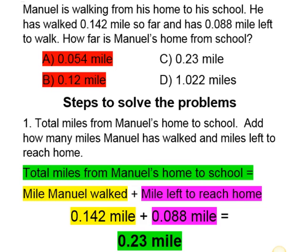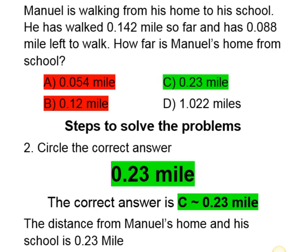So for step one, to find the total miles from Manuel's home to school, we're going to add the miles he has walked and also the miles he has left — 0.142 plus 0.088. When we add those together, our answer is 0.23 mile. Step two: circle the correct answer. In looking at our answer choices, we see that the correct answer is C, 0.23 mile. That is the distance from Manuel's home to his school.